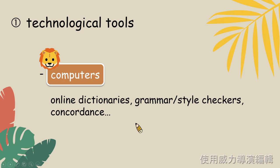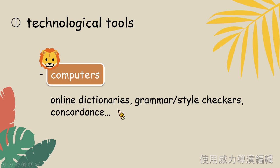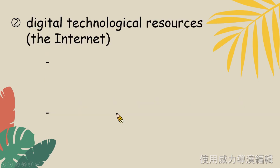When we use a computer, we can use it as online dictionaries, grammar style checkers, or to check the concordance. 其實電腦是最重要的,它可能讓我們用來查字典,查我們的文法,或者是查concordance。 那這裡指的是語詞所對應的意思。 使用電腦的話,我們可以運用digital technological resources, that means the internet.